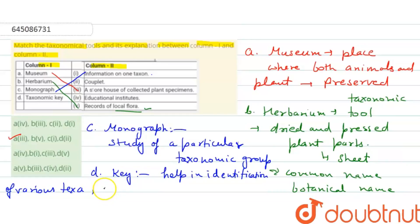And this pair is called a couplet. So here the taxonomic key matches with the second option. So the right answer is option B.